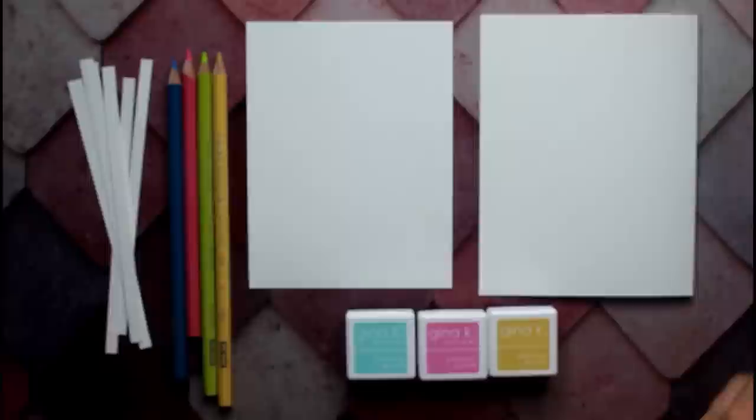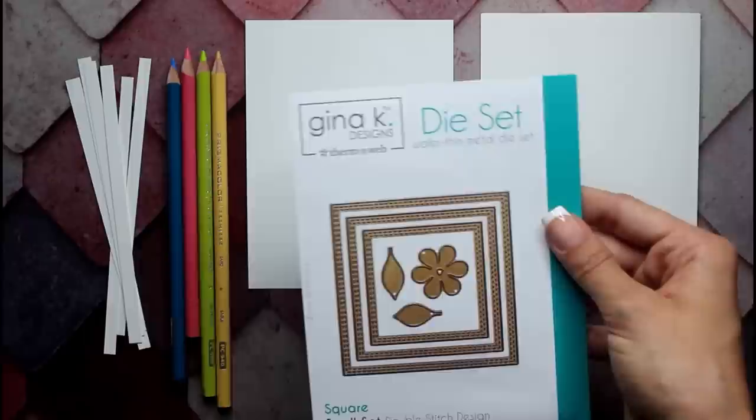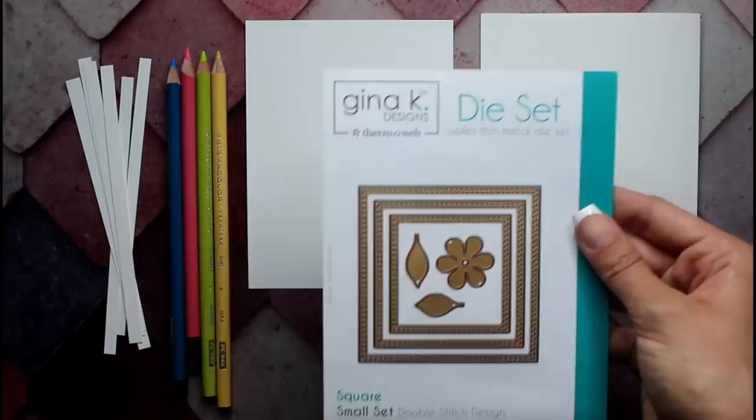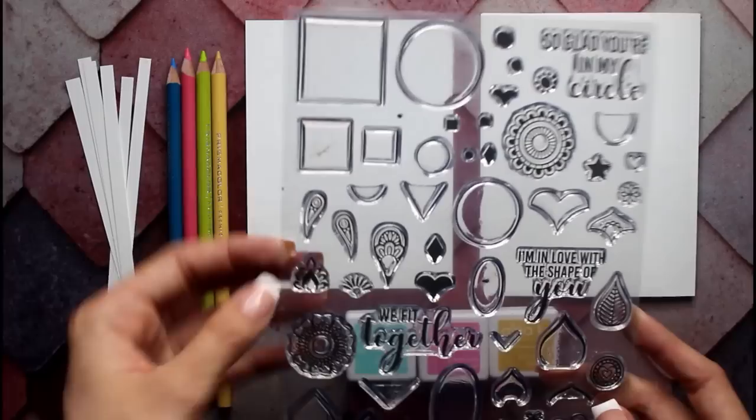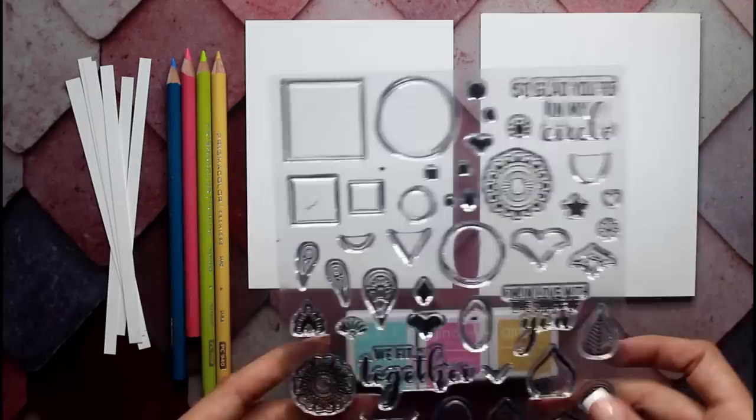Over here I have the Gina K Designs Antero web square small set double stitch design die set, and I'll be using the medium square in the center. Then I will be using the mandala maker, which is a stamp set designed by yours truly. I'll be using the largest circle and it's just going to be a simple spiral graph pattern so it won't take that long and it's just going to be fun to color in.